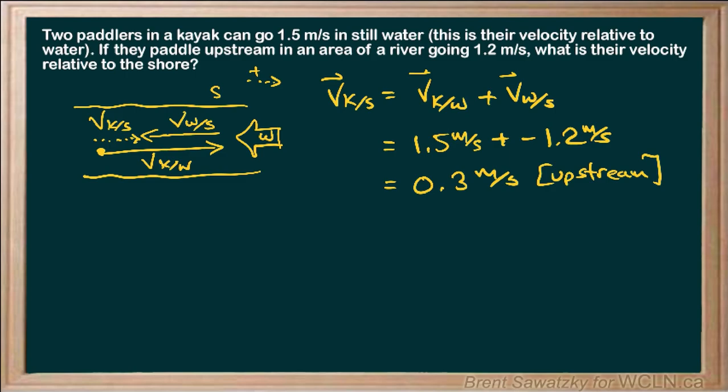And so basically the vector addition can be shown as a diagram, or it can be shown as an equation, and they should be totally consistent, and we can use either one of these to add them up and come up with our result. The velocity of the kayak relative to the shore, 0.3 meters per second upstream.